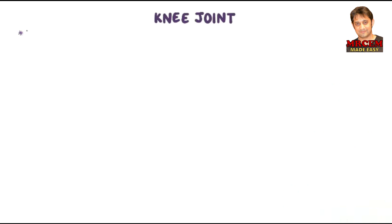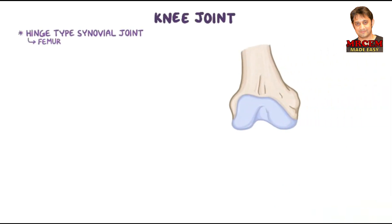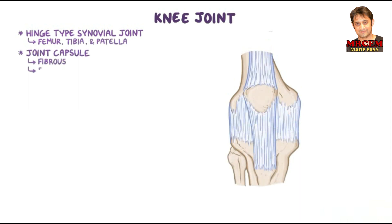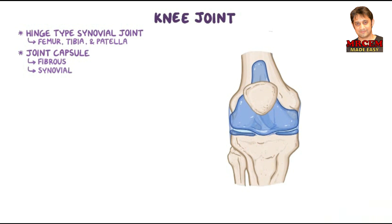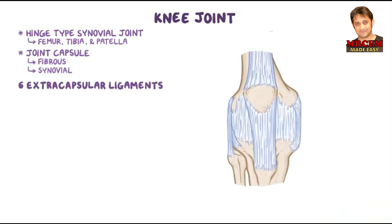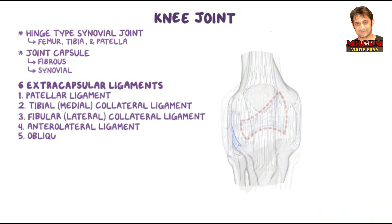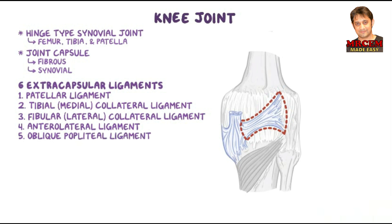In summary, the knee joint is a hinge type of synovial joint between the femur, tibia, and patella, with a joint capsule formed by a fibrous and synovial layer. The joint has six extracapsular ligaments: the patellar ligament, the tibial and fibular collateral ligaments, the anterolateral ligament, the oblique popliteal ligament, and the arcuate popliteal ligament.